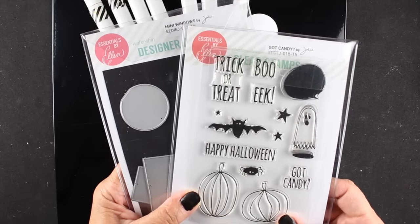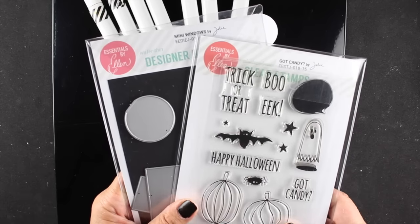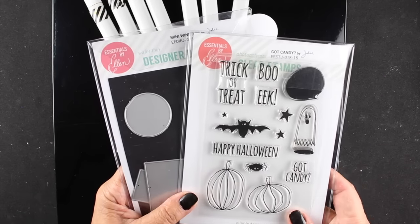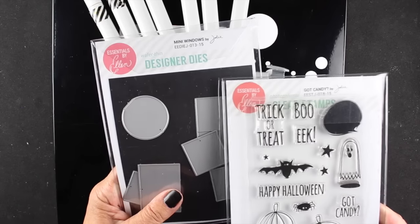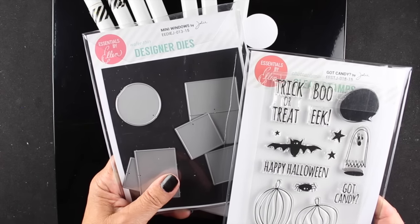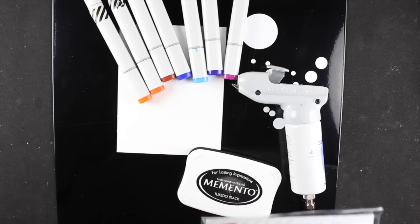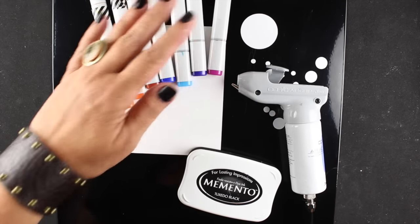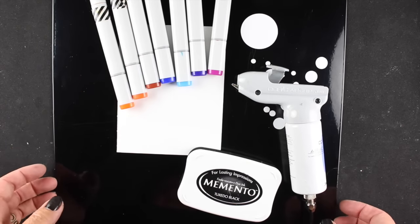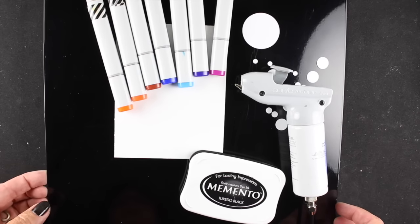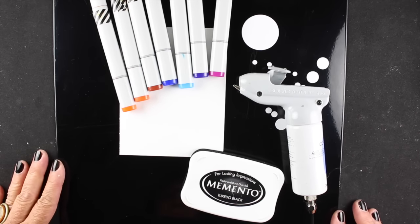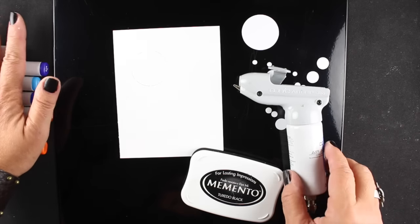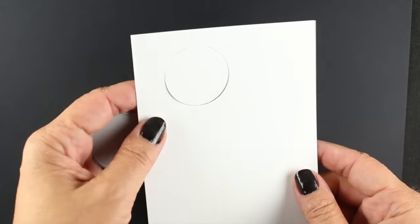I'm going to be using the brand new stamp set from Ellen Hutson designed by Julie Ebersole called Got Candy, along with the mini windows dies that was released last year. The little circle die is going to be perfect to create a moon for my scene. I have a bunch of things at the ready, including Copic markers, my airbrush, and my craft assistant. I'll be talking more about how I'm going to use that big black metal craft assistant as we go.